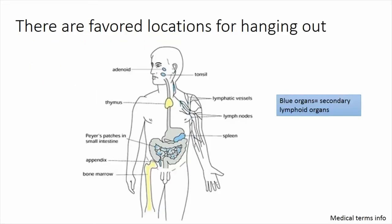Although the immune system circulates everywhere and percolates through all of our tissues, there are some locations where it especially likes to hang out. All of our immune system is born in our bone marrow. B cells come right out of the bone marrow—that's why they're called B cells, B for bone marrow. T cells have to go to the thymus, where they get educated about what they're supposed to fight. Then we have lymphoid organs—the tonsils, adenoids, lymph nodes, and the spleen.